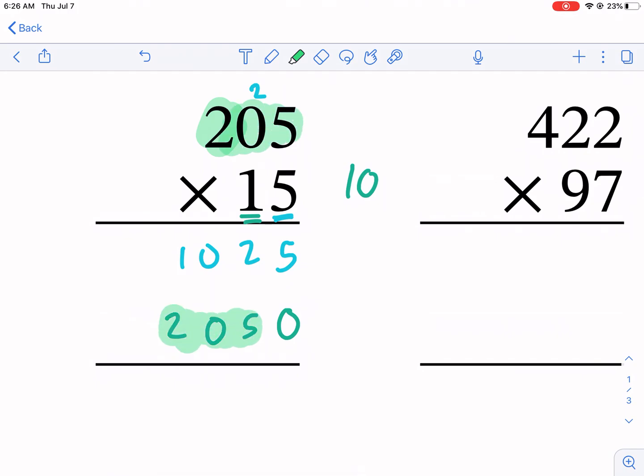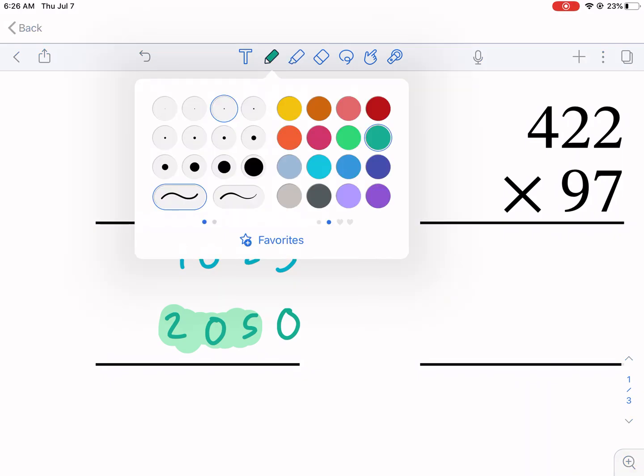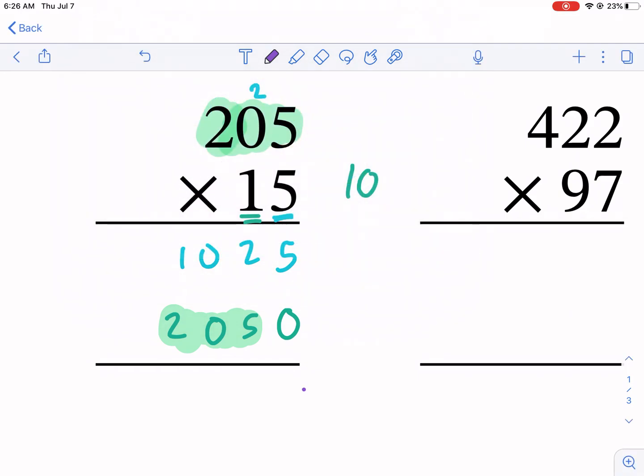Notice this: we had 205 written there, and we have 205 written there. The only difference is that extra 0. That's our self-check. If we have a 1 that we're multiplying by, we're going to see the same number written again. So I'm just going to add: 5, 7, 0, 3, and I'm done.